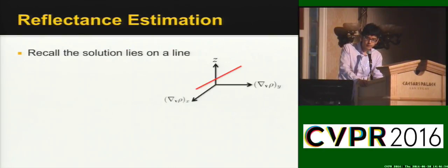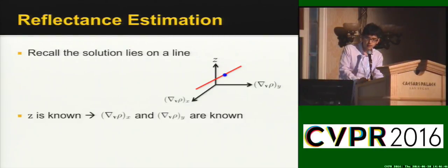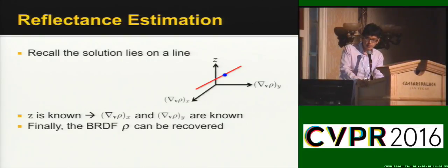Finally, after the shape is recovered, we can also try to estimate the reflectance. Recall that the solution will lie on a line, as shown here. We just do not know which point on the line is the correct solution. However, after the depth is known, we do know which point is the correct one. So the two BRDF derivatives are also known. Finally, by integrating the derivatives, the original BRDF can also be recovered.